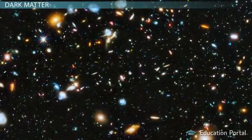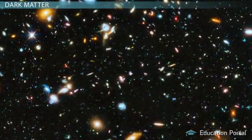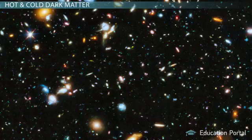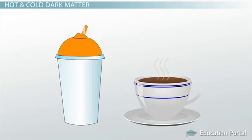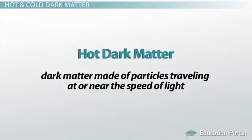The two forms of dark matter I'd like to discuss remind me of hot and cold drinks you could get at a local cafe. Hot dark matter is dark matter made of particles traveling at or near the speed of light.